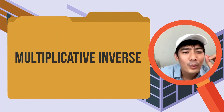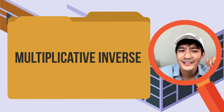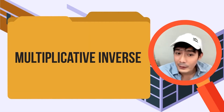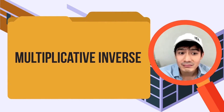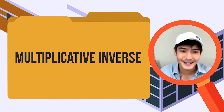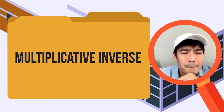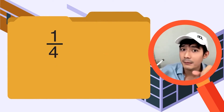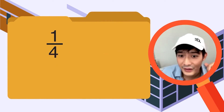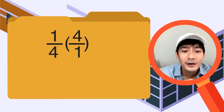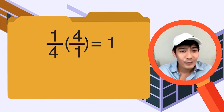Naalala niyo ba yung tinatawag nating Multiplicative Inverse? Ito yung reciprocal — o yung numero na kapag may multiply sa isang number, ang makukuha mong sagot ay 1. Ang multiplicative inverse ng 1/4 ay 4 over 1, dahil 1/4 times 4 is 4 over 4, or simply 1.